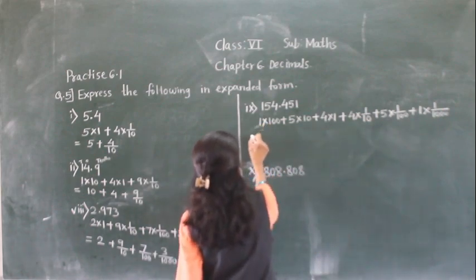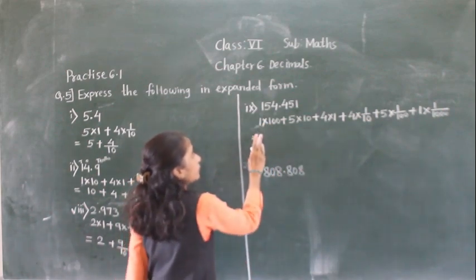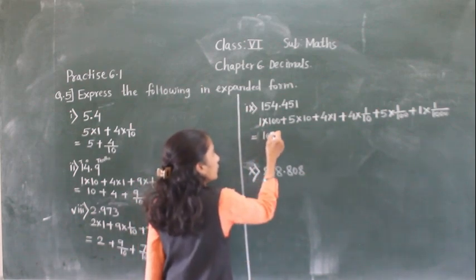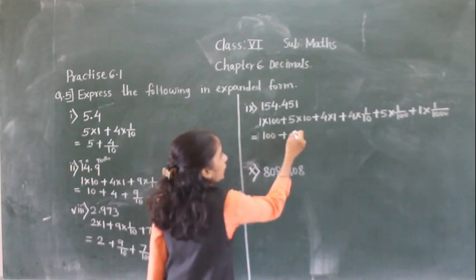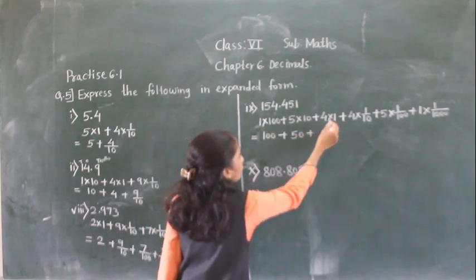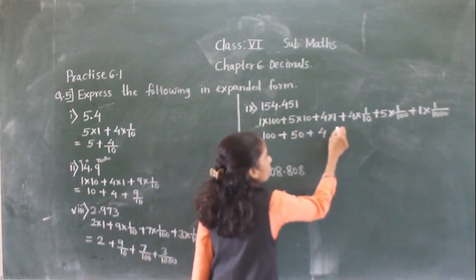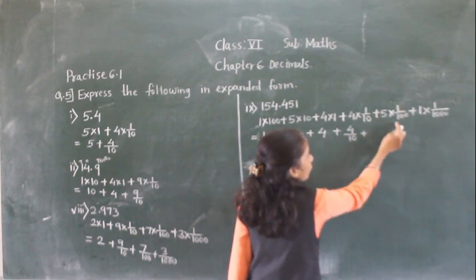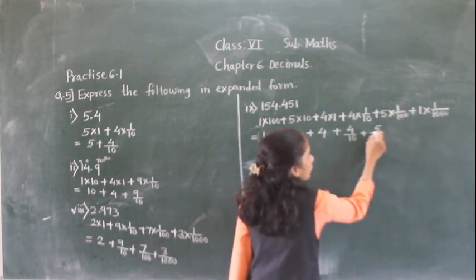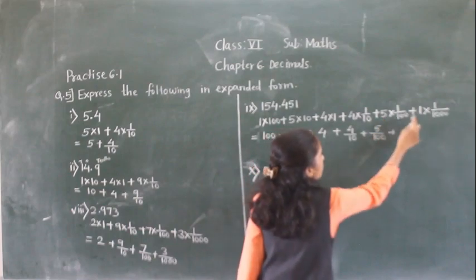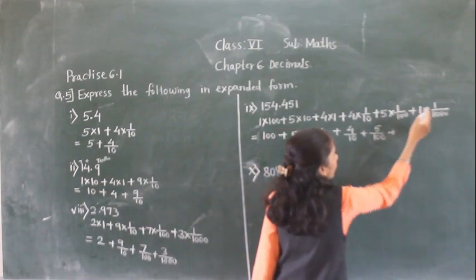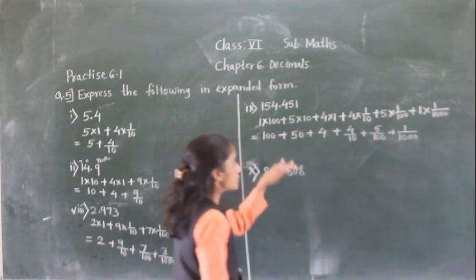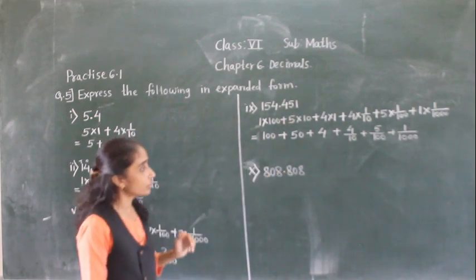So now: 1 into 100 is 100, plus 5 into 10 is 50, plus 4 into 1 is 4, plus 4 into 1 upon 10 means 4 upon 10, plus 5 into 1 upon 100 means 5 upon 100, plus 1 into 1 upon 1000 means 1 upon 1000. This is the expanded notation for this number.